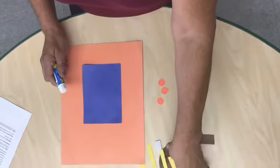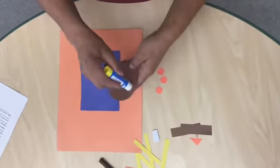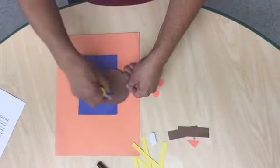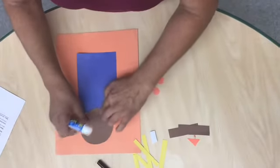Then I'm gonna get the brown circle that's gonna be for the head and face.